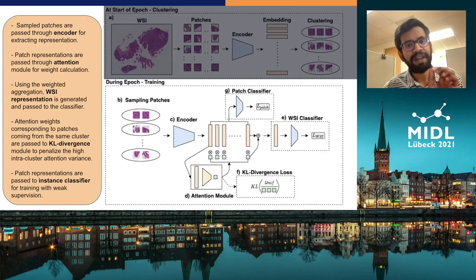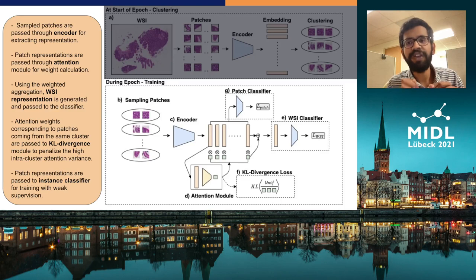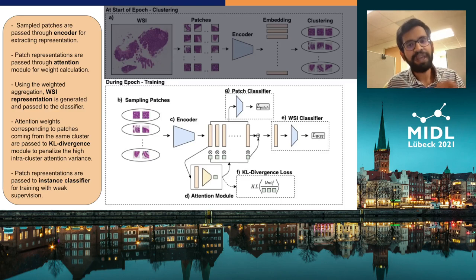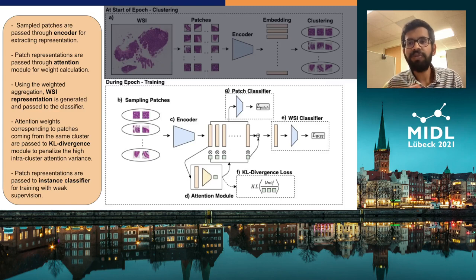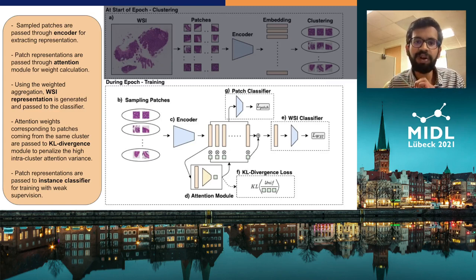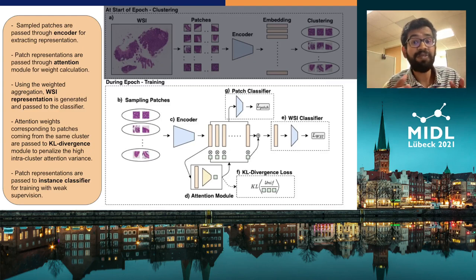To further stabilize training and compensate for small WSI datasets, patch-level loss is also included with a weak assumption. We also include KL divergence loss between patch attention weights and a uniform distribution, to regularize the clustering mechanism and penalize the model if very different weights are assigned to patches coming from the same cluster, resulting in better cluster quality.